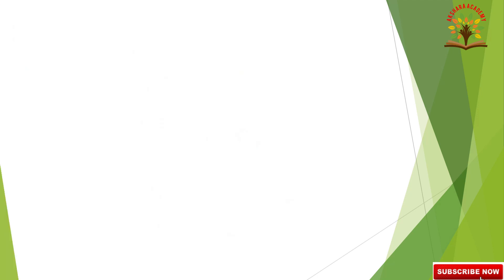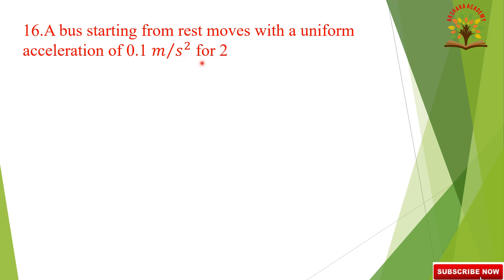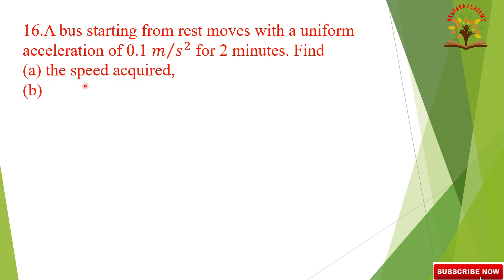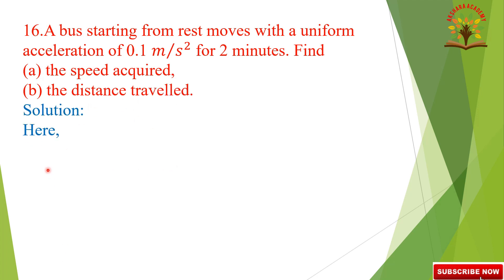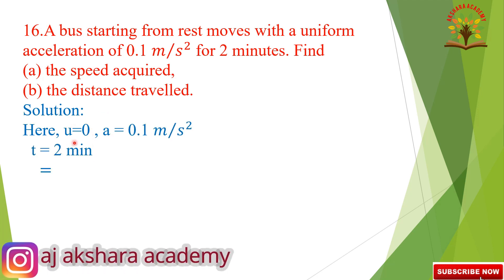Question number 16: A bus starting from rest moves with a uniform acceleration of 0.1 meter per second square for 2 minutes. Find first, the speed acquired, and second, the distance travelled. In this question, the bus is starting from rest, meaning U is equal to 0.